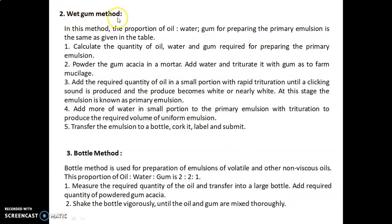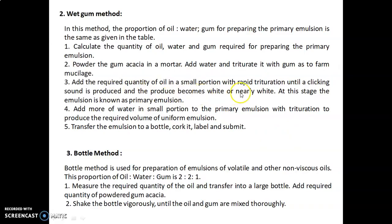The second method is the wet gum method. The proportion of oil to water to gum for preparing the primary emulsion is the same as in the table. Calculate the required quantities, then powder gum acacia in a mortar, add water, and triturate to form mucilage. Then add the required quantity of oil in small portions with rapid trituration until a clicking sound is produced and the product becomes white or nearly white — this is the primary emulsion.